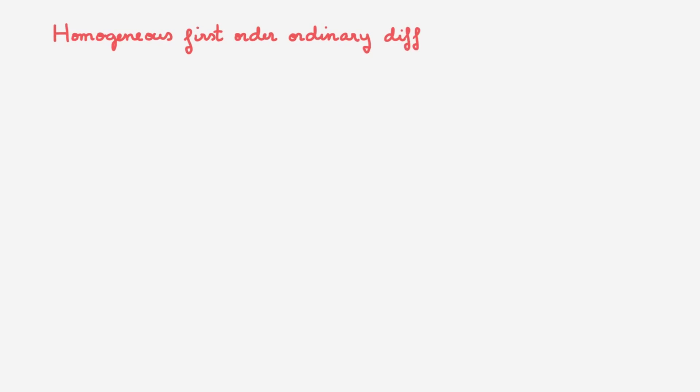In this video we consider homogeneous first order ordinary differential equations. We consider a differential equation of this form, and we call such an equation homogeneous if the function f is a homogeneous function of degree 0.